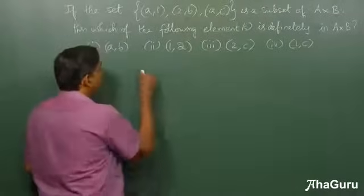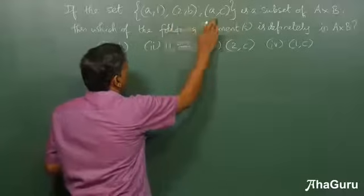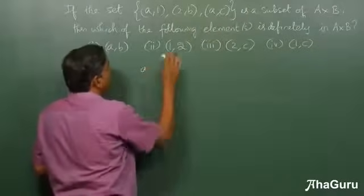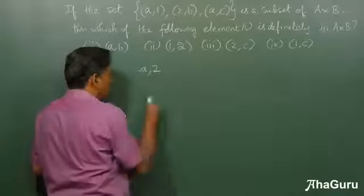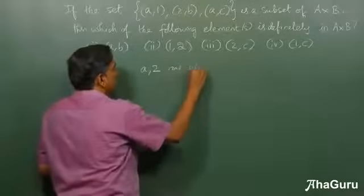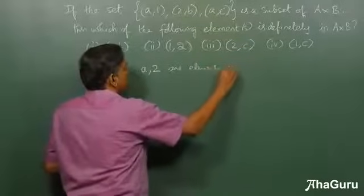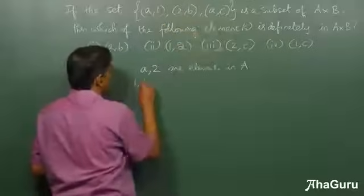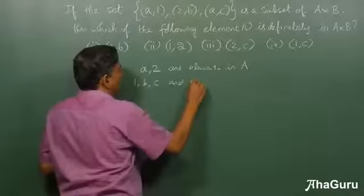So if you know that {(a,1), (2,b), (a,c)} is a subset of A×B, we can say that a and 2 are elements in set A, and similarly 1, b, and c are elements in set B.